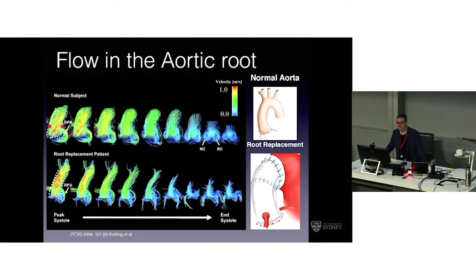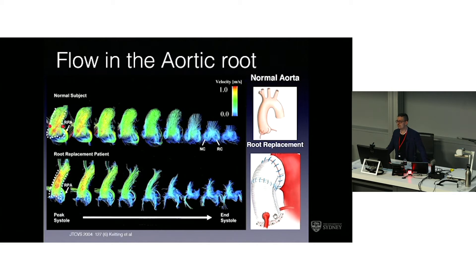Here's a picture from JTCVS showing flow inside a normal subject. This is the peak of systole and the end of systole, showing velocity in metres per second. You can see a very high velocity coming out the aortic valve into the ascending aorta. As systole ends and pressure drops, you can see symmetrical swirls in the sinuses that beautifully close the valve. This is what the normal aortic root looks like. In contrast, this is an artificial aortic root — a straight graft — which doesn't mimic it properly. In a patient with a straight graft replacing the valve with reimplanted coronary arteries, the eddies are very disorientated, not smooth, not symmetrical. We think the aortic valve closure is clearly supported by the root shape.